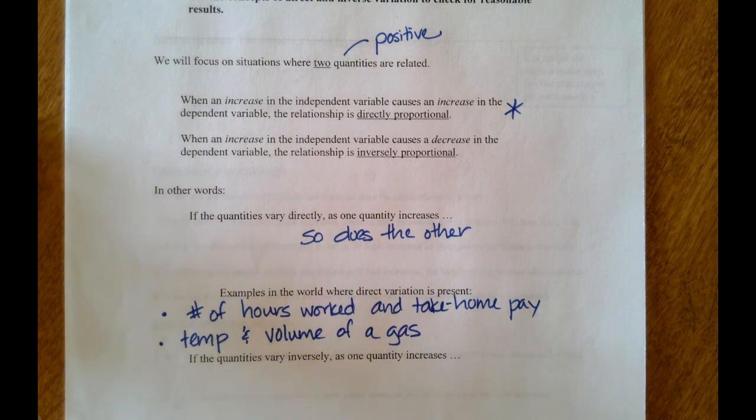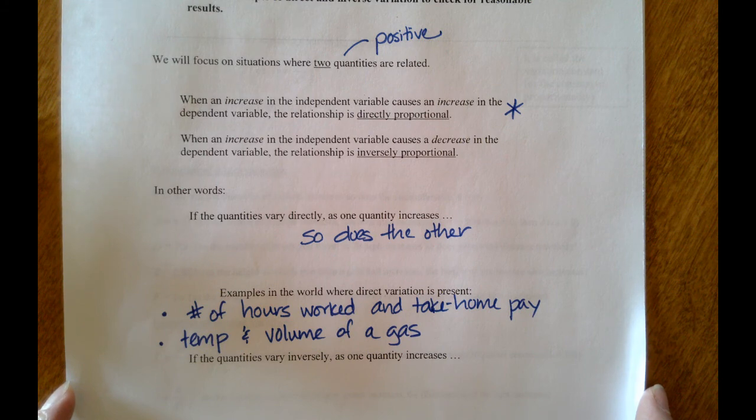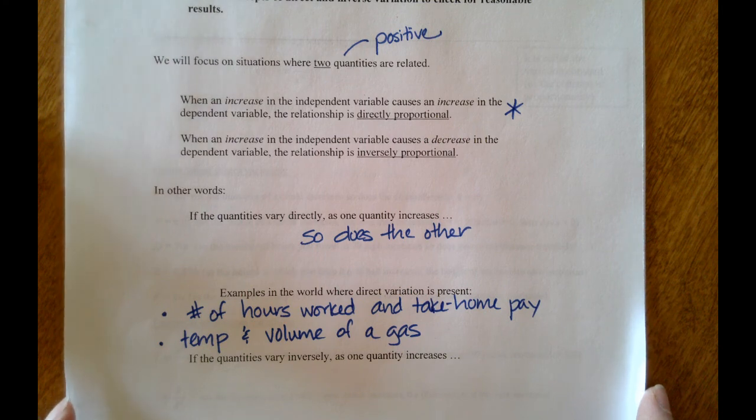And there are other applications out in the world as well where as one quantity increases so does the other. And the reverse would be true as well. If one quantity decreases so does the other. They may not decrease or increase at the same rate, but they both move in the same direction if we have direct variation.